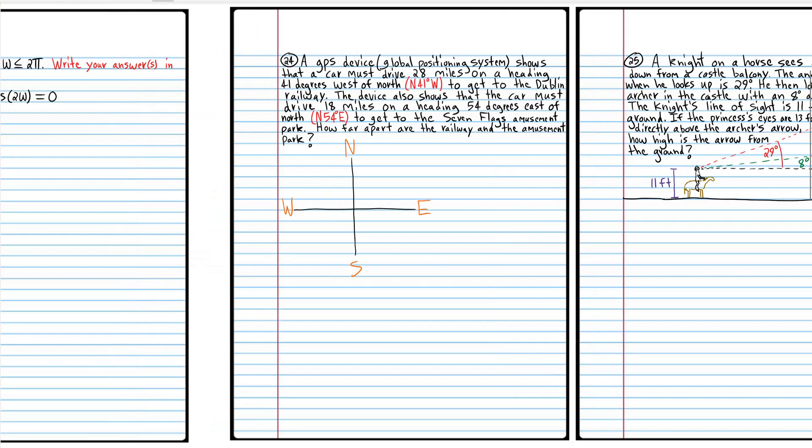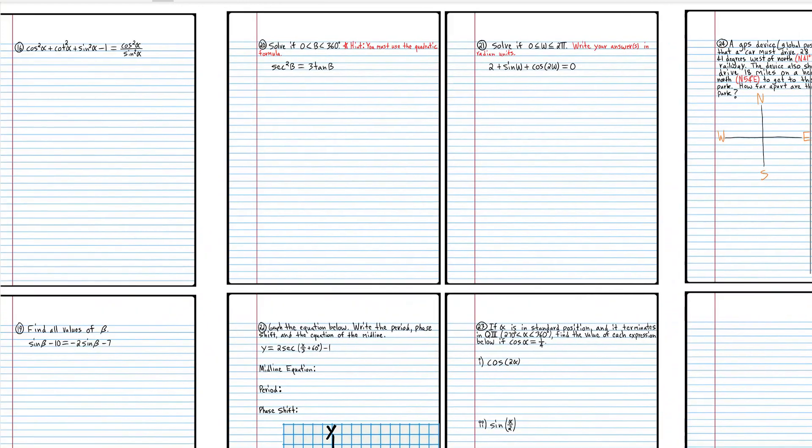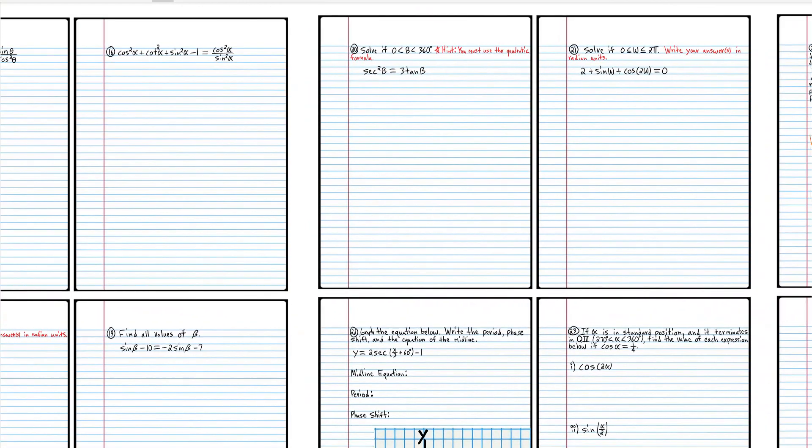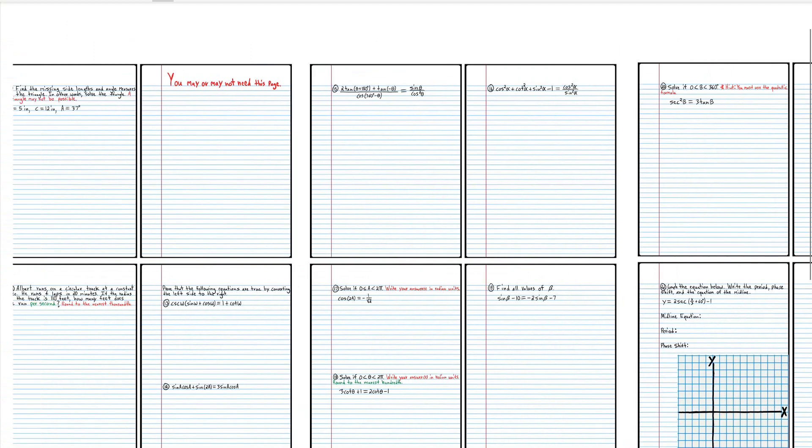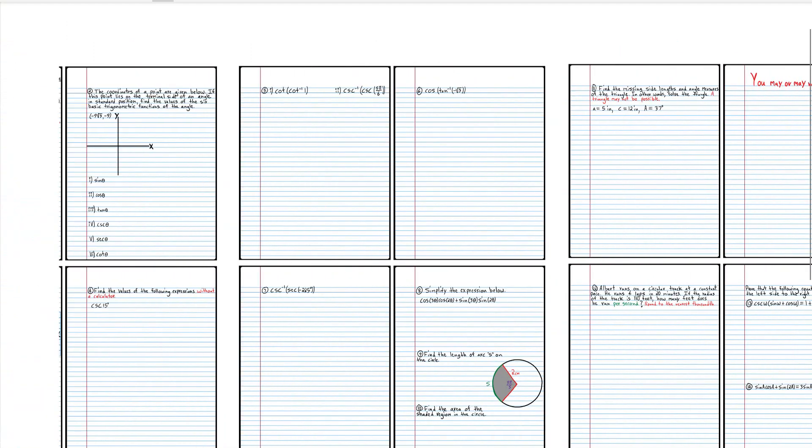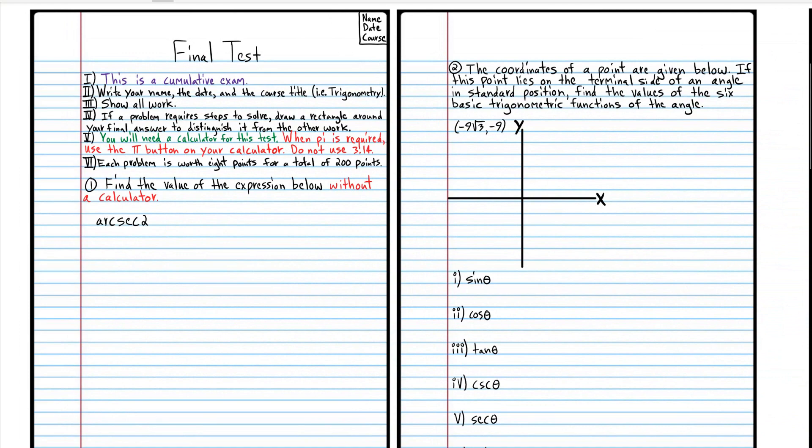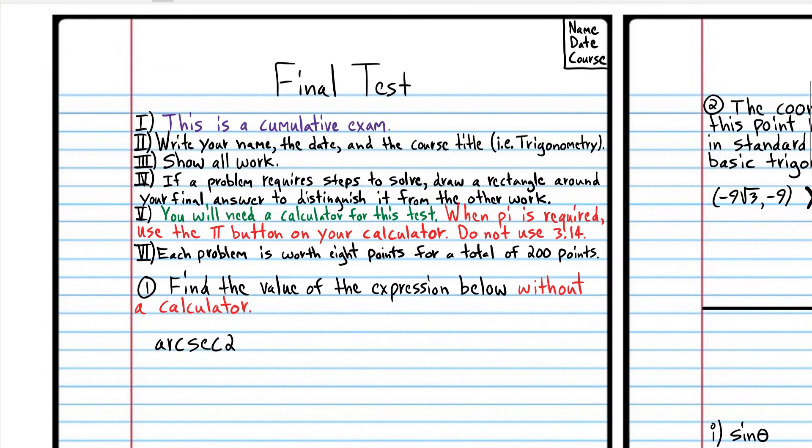So you should have everything cleared off your desk. No textbook, no internet, no help from anybody. You need to do this on your own. And you should have a pencil and a calculator. Make sure your calculator is in the right mode. You may have to change between degree mode and radian mode throughout this test. Make sure that you know which mode you're in because you can lose a lot of points if you're in the wrong mode for a particular problem.